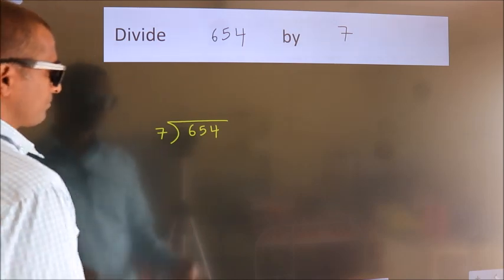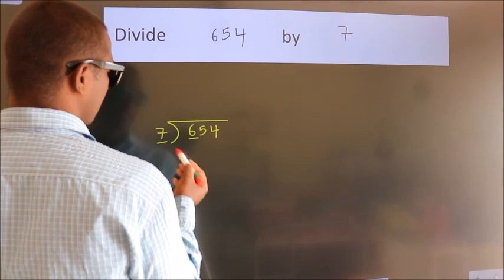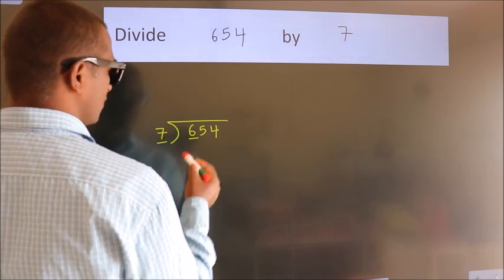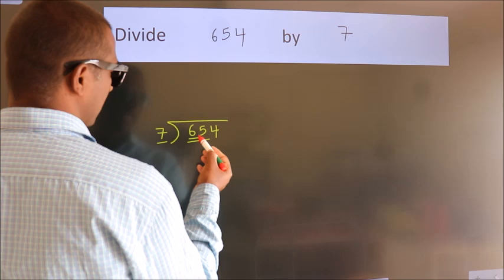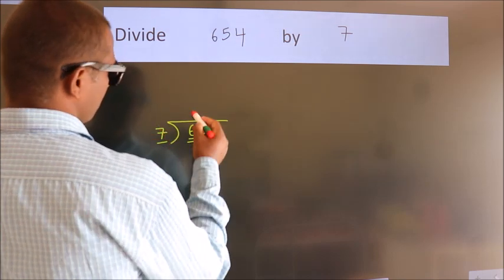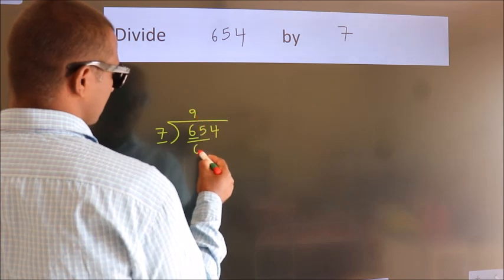Next. Here we have 6, here 7. 6 is smaller than 7. So we should take two numbers, 65. A number close to 65 in 7 table is 7 nines, 63.